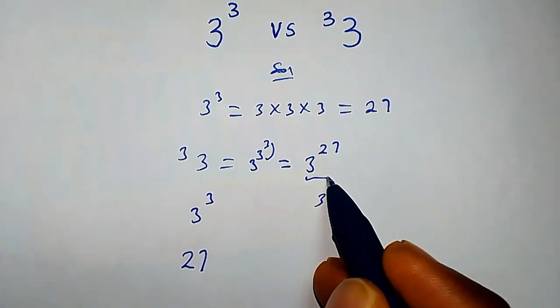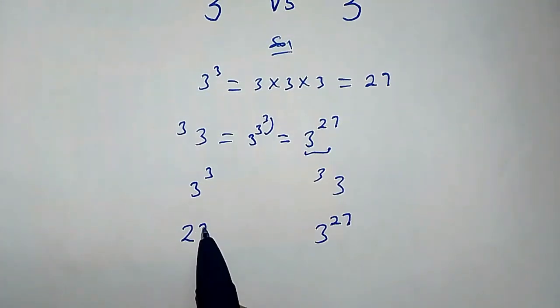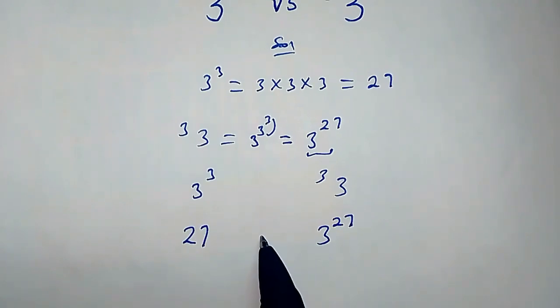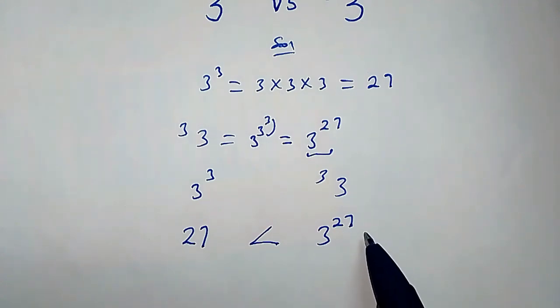3 to the super power of 3 is 3 raised by 27. Clearly, 27 is less than this, because when you plug this in your calculator, you're going to obtain a very large number.